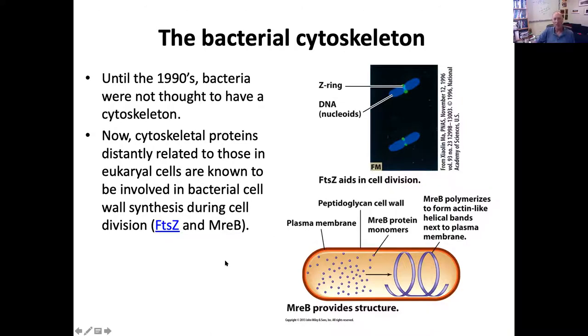But bacteria, it turns out, do have homologues, not just analogues, but homologues of some of the key proteins that are used in the eukaryotic cytoskeleton. There's a link here you can click on to see a very cool reconstruction of the location of FtsZ in the bacterial cell. I'm going to go to the next. I'm not going to do that right now. You can do it on your own time. I'm going to go to the next slide, and then we'll come back to this one.